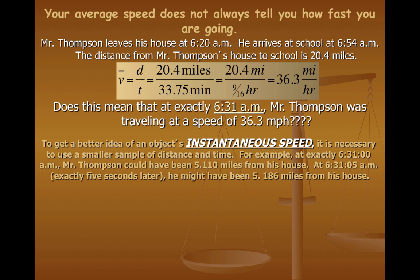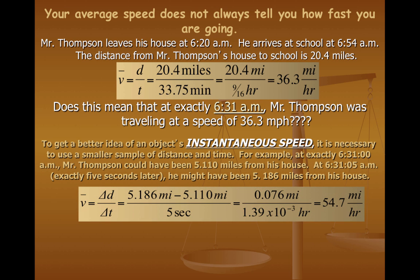If I wanted to get a better idea of what's known as my instantaneous speed, it would be necessary for me to use a smaller sample of distance and time. For example, at exactly 6:31 and 00 seconds, I could have been traveling 5.110 miles from my house. Five seconds later, I might be 5.186 miles from my house.